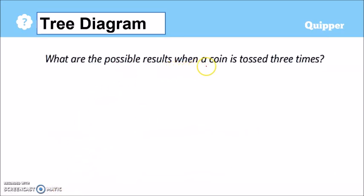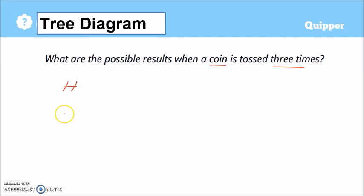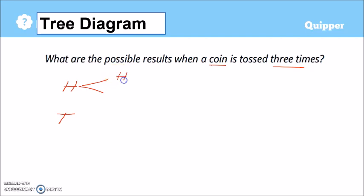What are the possible results when a coin is tossed three times? When we toss a coin, there could be two possible results — we can either have a head or a tail on our first toss. When we toss the coin for the second time, it's still either head or tail. So this can be head or tail, and this can also be head or tail.